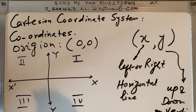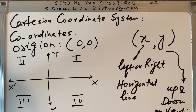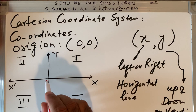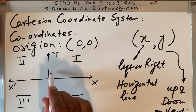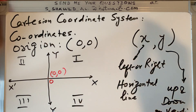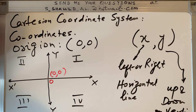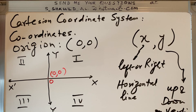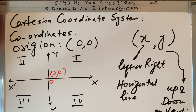The intersection point of these two lines is called the origin, and the coordinate of the origin is always 0, 0. With this Cartesian coordinate system, we can determine how far any given point is from the origin.